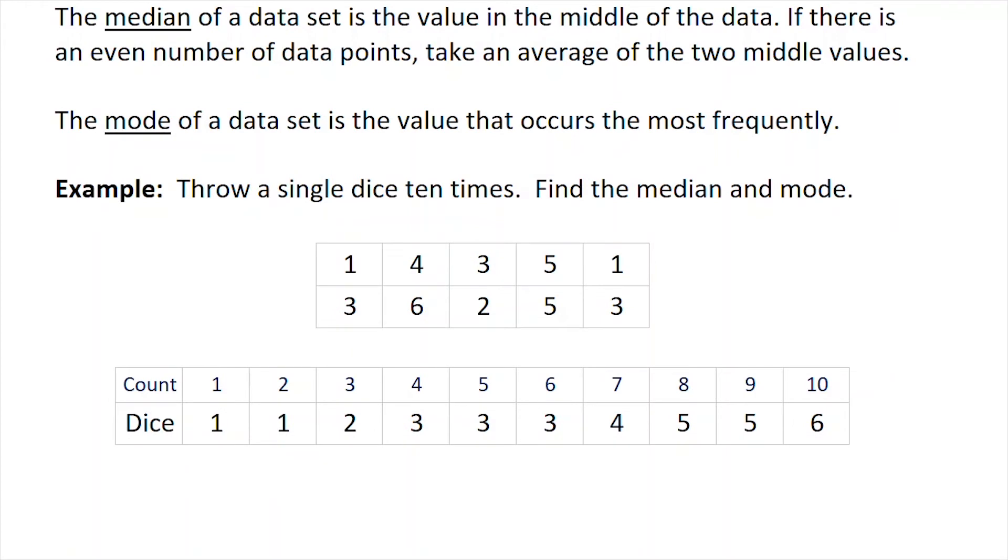The median of a data set is the value exactly in the middle of the data. If there's an even number of data points, we'll have to take an average of the two middle values. If there's an odd number, it's just the value in the middle. The mode of a data set is the value that occurs most frequently.